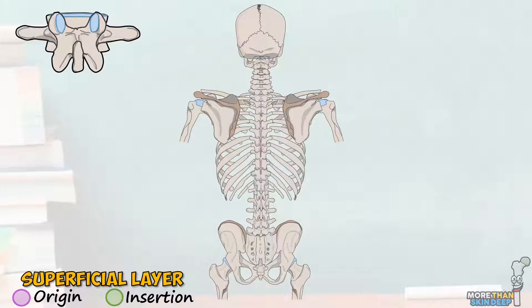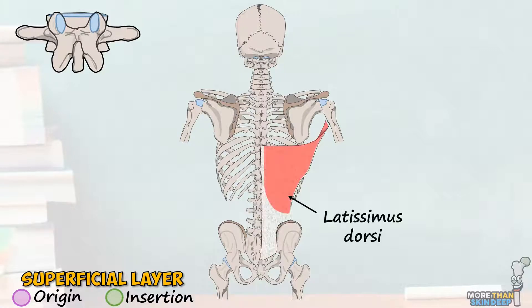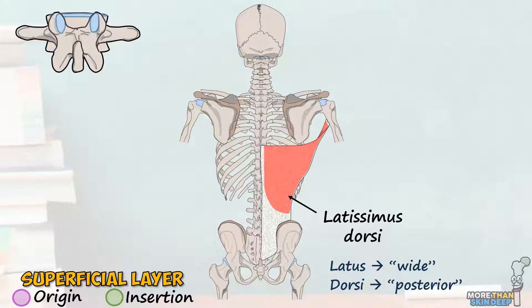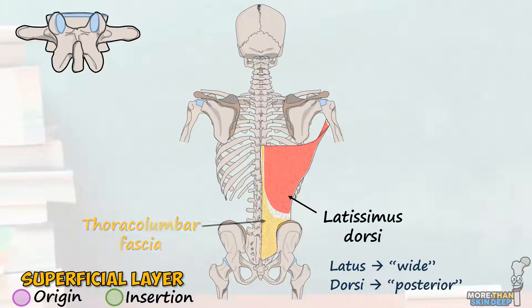Let's start with the big one everyone knows: latissimus dorsi. This large triangular-shaped muscle is named very literally — 'latissimus' comes from the Latin word 'latus' for wide, and 'dorsi' simply relates to its dorsal or posterior position. Thus its name literally means 'widest muscle of the back.' This huge muscle originates entirely from the thoracolumbar fascia, which is a large connective tissue sheath surrounding the deep muscles of the back and trunk. More specifically, latissimus dorsi approximately originates from the spinous processes of T7 to L5, the iliac crests, and the posterior parts of the ninth to twelfth ribs.